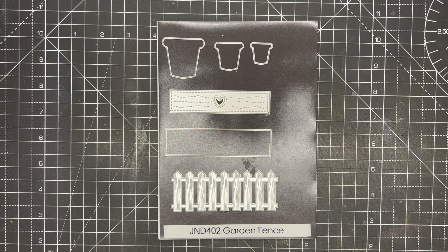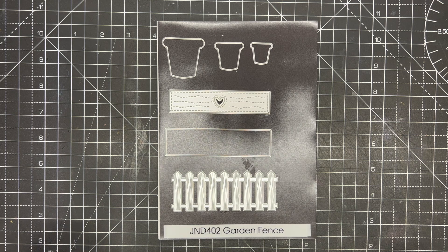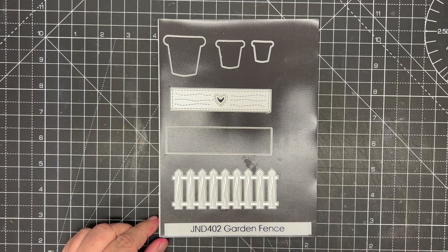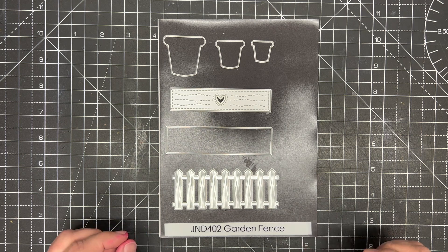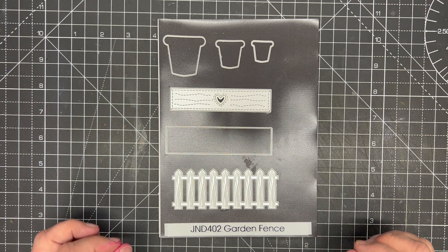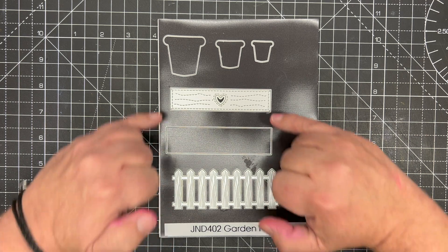In this video demonstration I'm going to show you how to make a beautiful, quite simple card using the garden fence from the JND402 garden fence die. It's a really simple die set that has the fence, it has a window box insert and outset.